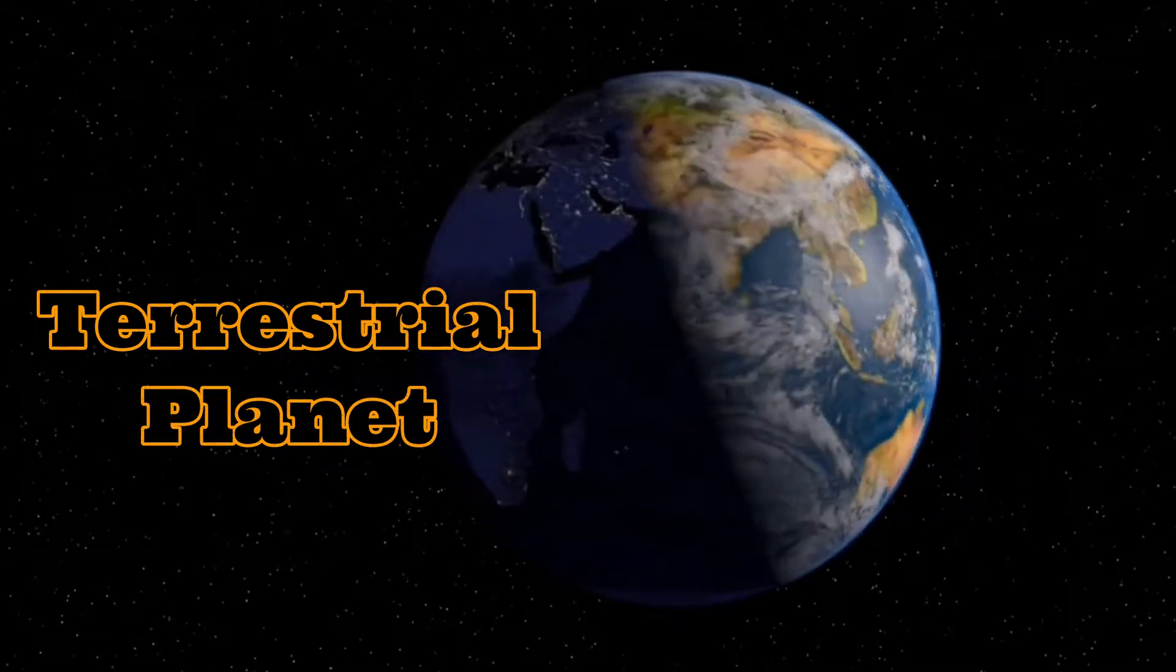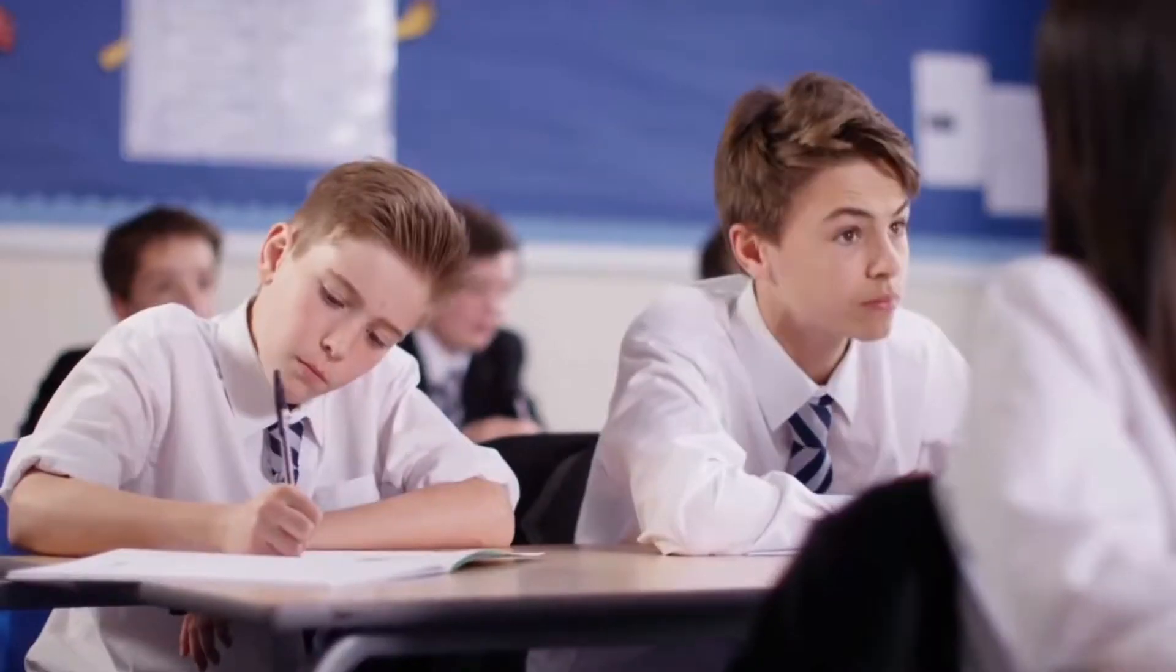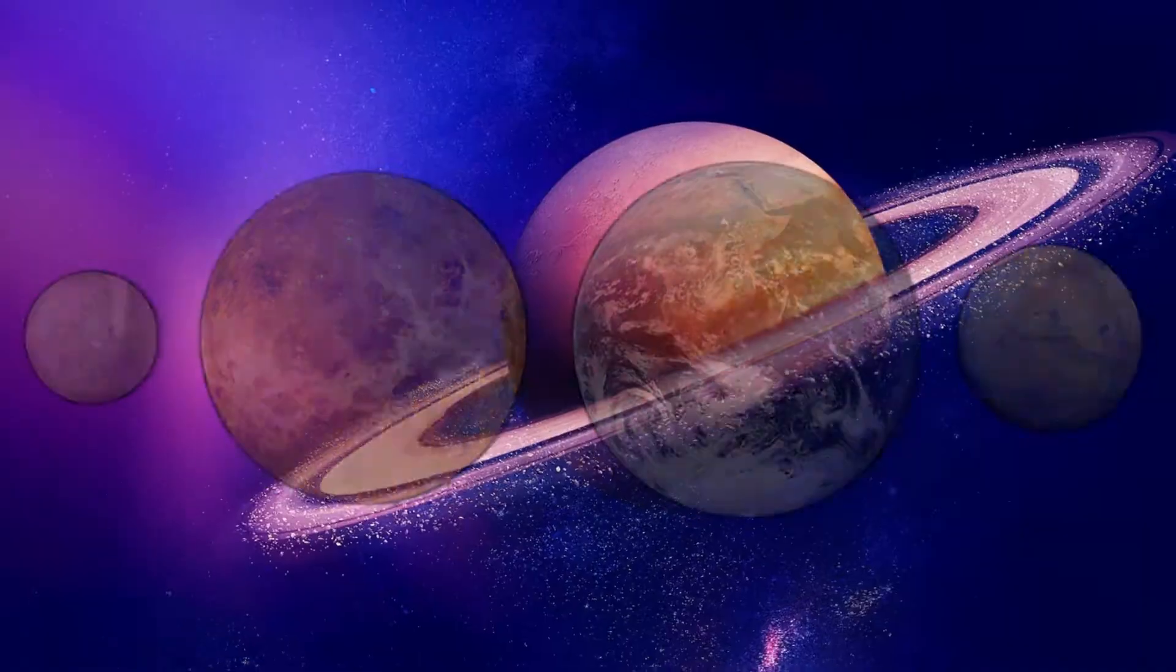So can a terrestrial planet like Earth have a set of rings just like Saturn? You might be surprised to learn that yes, terrestrial planets can have rings like Saturn. As you probably know,